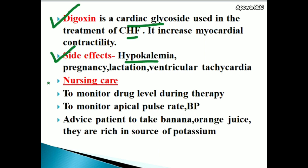Nursing care for patients on digoxin: monitor drug level during therapy, monitor apical pulse rate and blood pressure, and advise the patient to take banana or orange juice as they are rich sources of potassium, to help avoid hypokalemia.